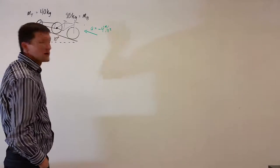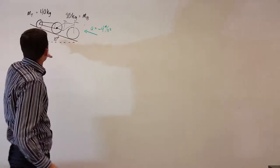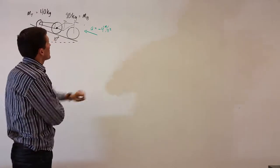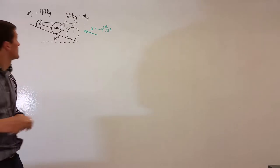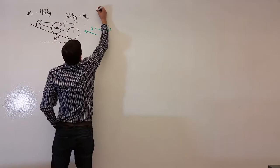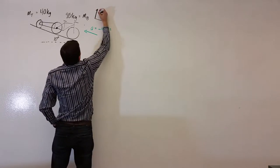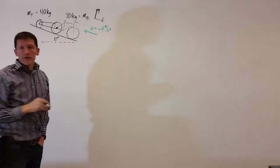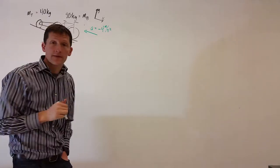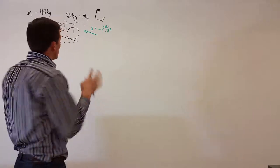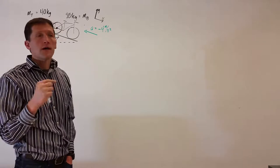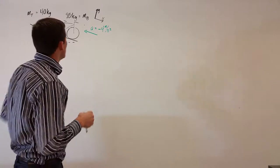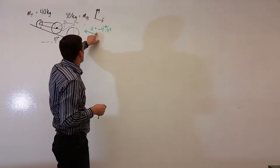We're looking at this problem which involves a bicycle and trailer going down a 10-degree incline. The acceleration is given as negative 4 meters per second squared — negative because I'm setting up a tilted coordinate system where down the incline is the positive x-axis. I'm using a tilted coordinate system so that one coordinate direction aligns with the direction of the acceleration vector.